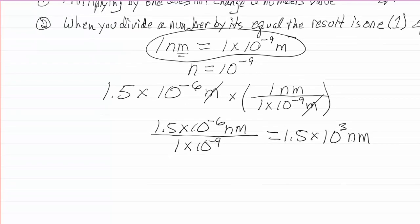Now 1.5 times ten to the third happens to be 1,500. This is scientific notation right here. When we're dealing with light wavelengths in nanometers, we tend to just write it like this. We would say 1,500 nanometers.